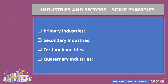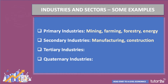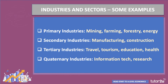The primary sector includes mining and farming, fishing, forestry and energy. The secondary industries include manufacturing industries and the construction sector. The tertiary industries include many, including travel and tourism, education and health, and business and financial services. And quaternary includes information technology and research and development.